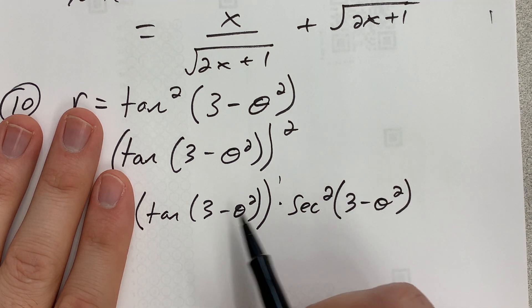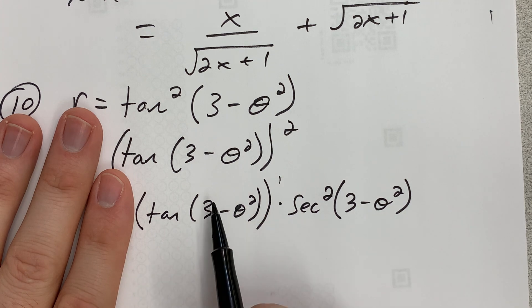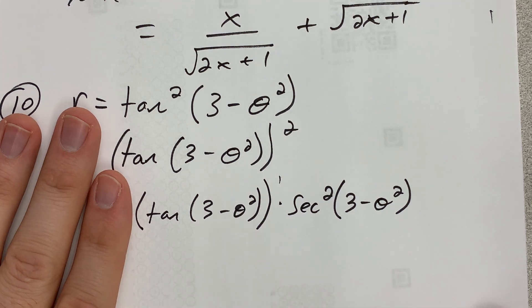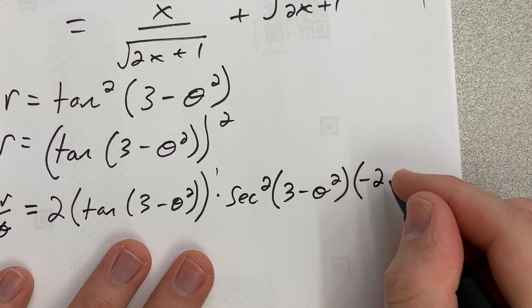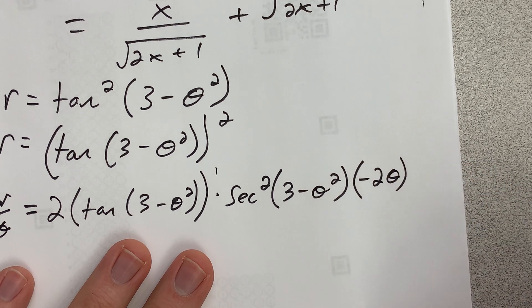And then times by the derivative of the inside, which is (3 - θ²). So when I take the derivative of that, it will be negative 2θ, just as if it was x.